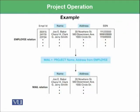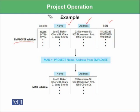Let's have a typical example. We have an employee relation having employee ID, name, address, and SSN. This is stored in the employee relation and we want to only print the names and addresses of the employees — we don't need the other columns, just name and address.